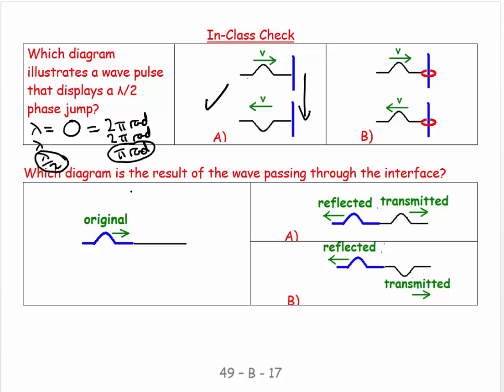Second question. Which diagram is the result of a wave passing through the interface? So we have a thick string, high mass per unit length, going into a low mass per unit length string. And what's going to happen? Is it going to continue as a crest and reflect as a crest? Or is it going to continue as a trough and reflect as a crest? And the answer, of course, is that it continues as a crest and reflects as a crest.